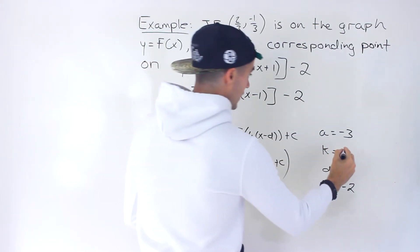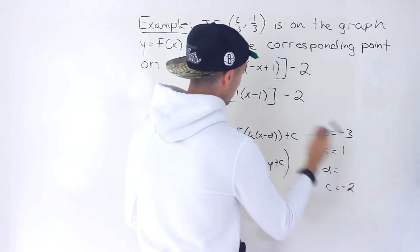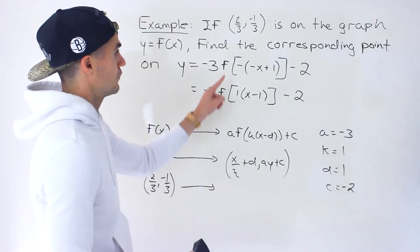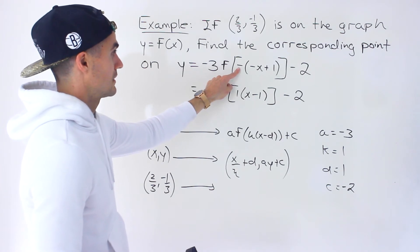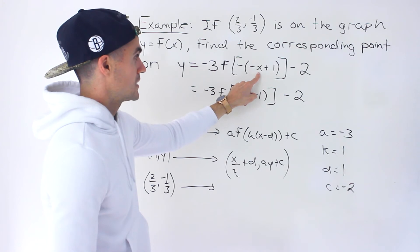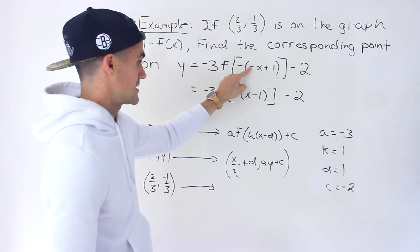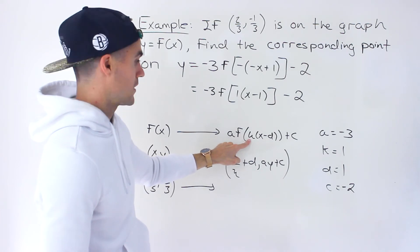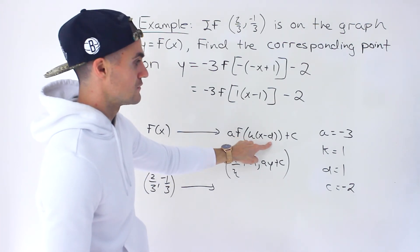And so the k value actually ends up being just positive 1. Then the d value ends up being positive 1. So you got to be careful. It's a little tricky. You may think that just looking at it, the k value is negative 1. But it's not because there's still something in front of the x. The x has to be by itself. And then you can get the corresponding k value and d value.